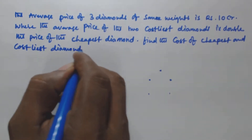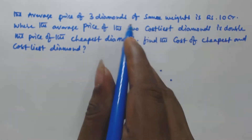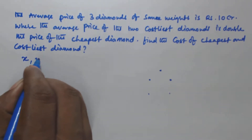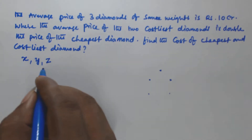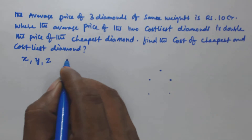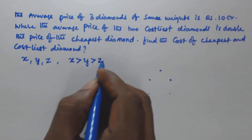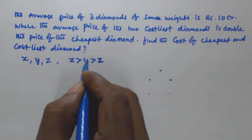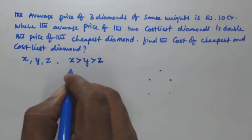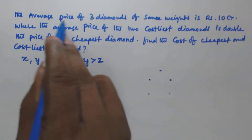The average price of three diamonds of same weights is 10 crores. Let us assume the prices of the three diamonds are x, y, and z. Also assume x is greater than y, and y is greater than z. That way we can decide which is the costliest and which is the cheapest.